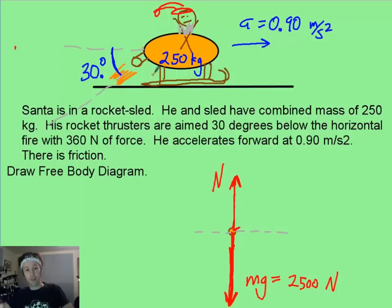But it's not going to be, it's only 360 newtons - it's nowhere near as big as this 2,500. So I'm just going to put this small at about 30 degrees. And that is my force of rocket.